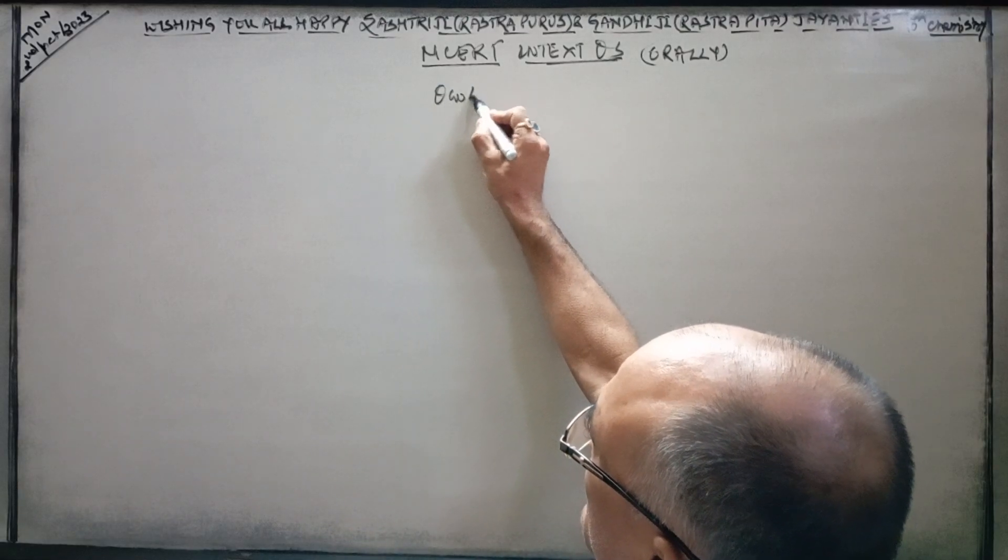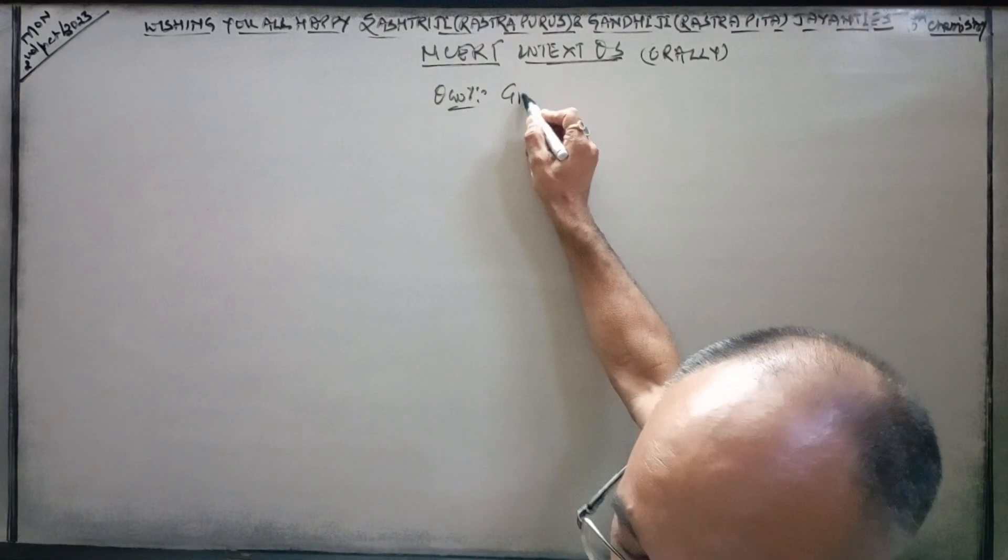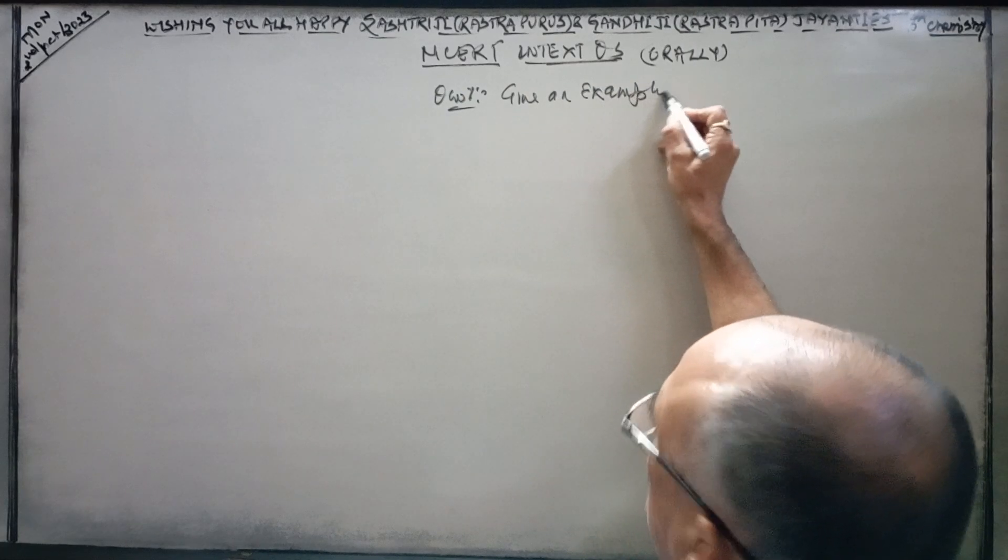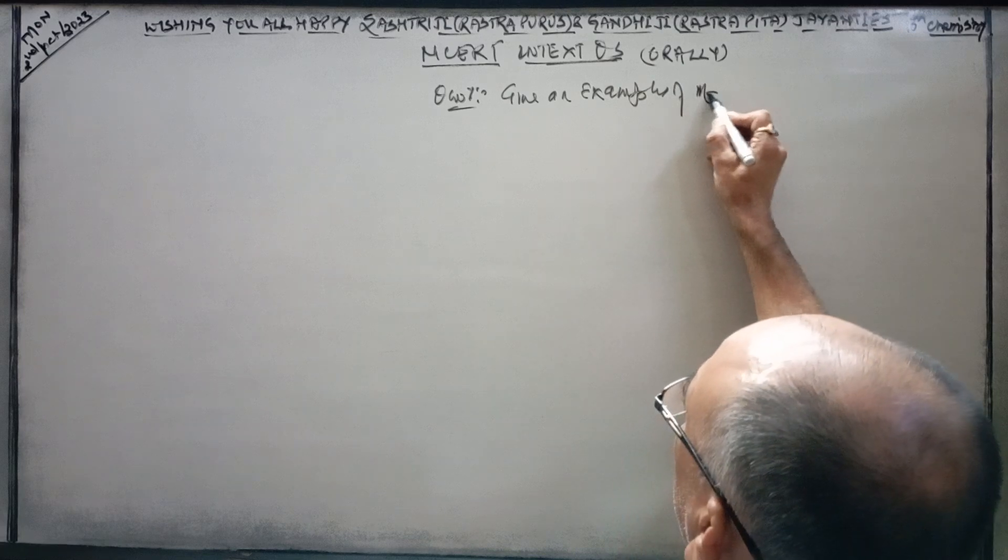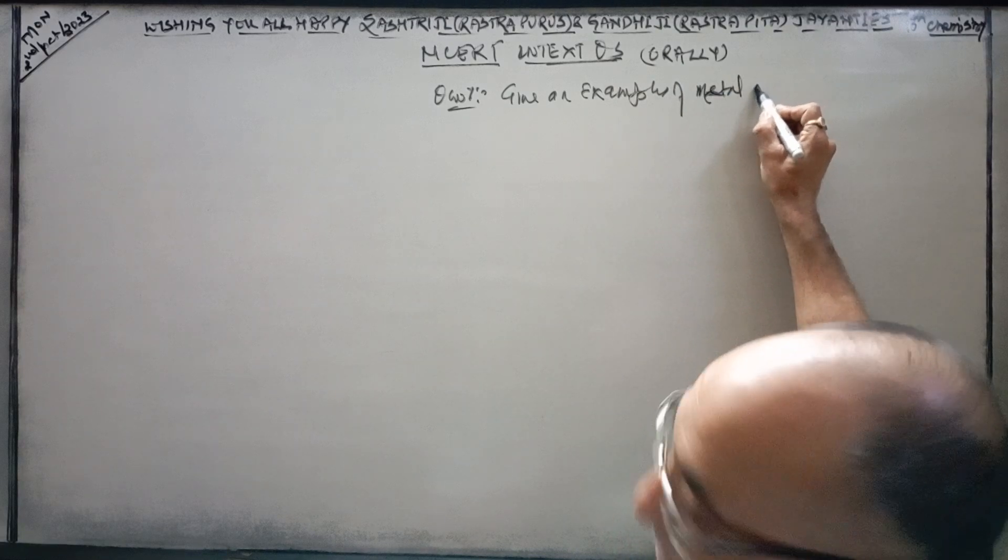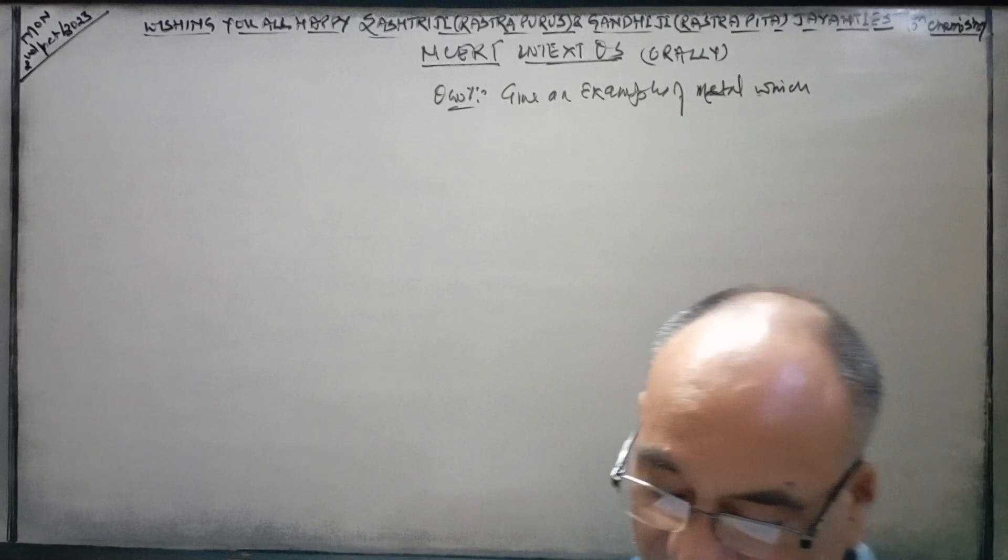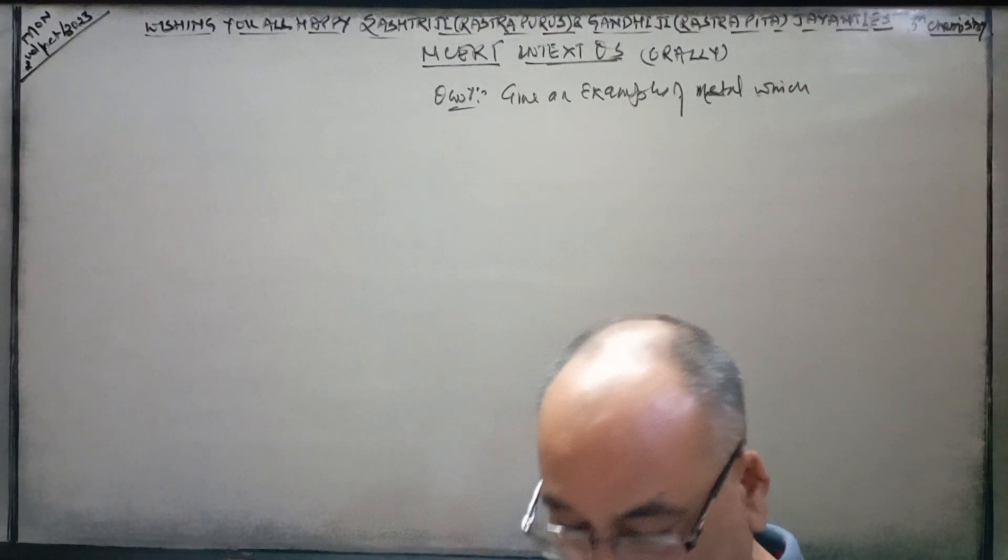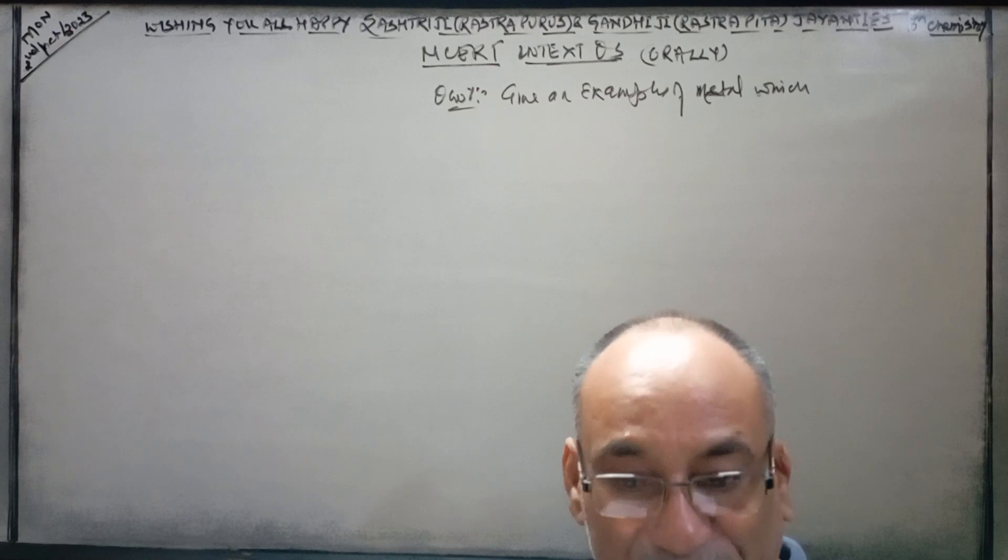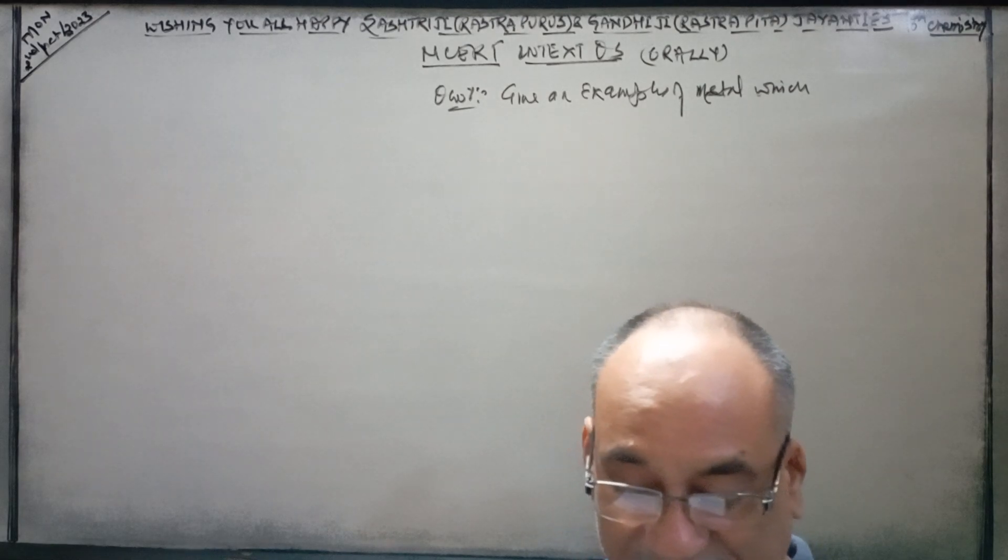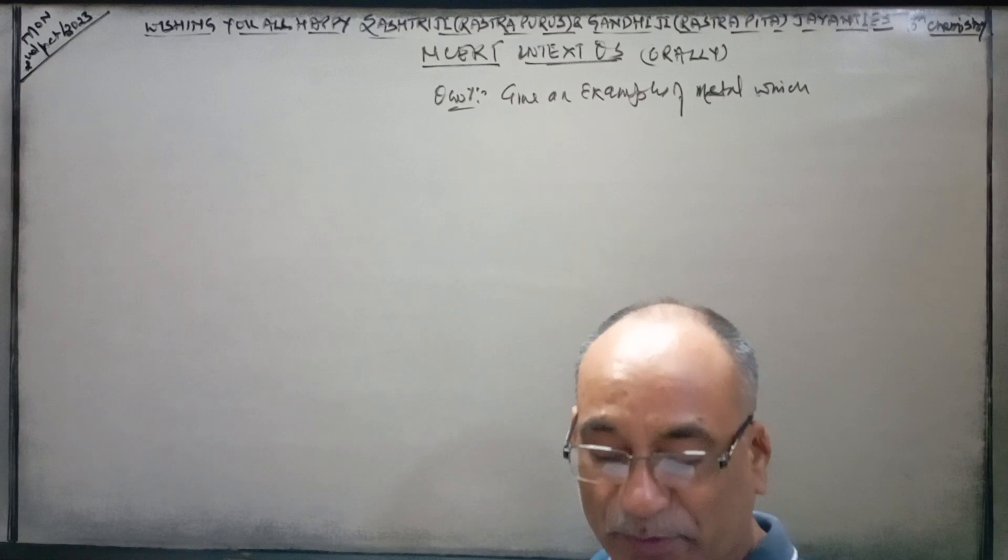Question number one asks: Give examples of metals which - it has four parts. First is liquid at room temperature, second can be easily cut with a knife, third is the best conductor of heat, and fourth is the poor conductor of heat.